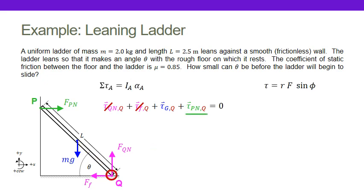Now I need to calculate the torque due to the wall. I do the same thing: I need my position vector, which points up the ladder. The magnitude of that position vector is the full length of the ladder, L. I'm going to figure out the sine of the angle. The force I'll call the normal force of the wall and include it in my equations.